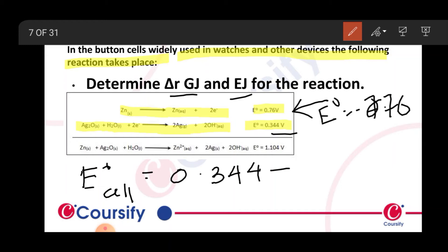Minus of minus 0.76 equal to... we have oxidation reaction. Reduction potential liya, oxidation reaction ka oxidation potential diya hua hai. So oxidation reaction ka oxidation potential plus 0.76. Oxidation reaction ka reduction potential hoga minus 0.76, so we take minus 0.76. The answer is plus 1.104 volt.